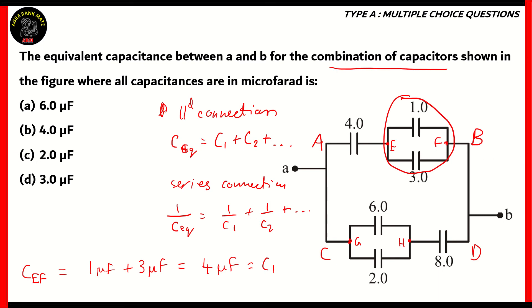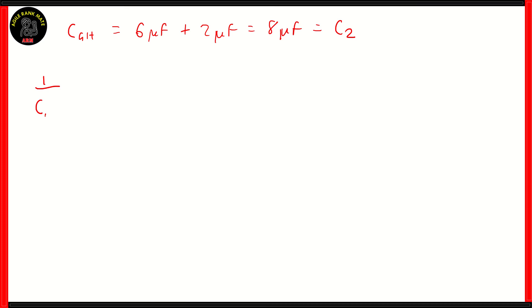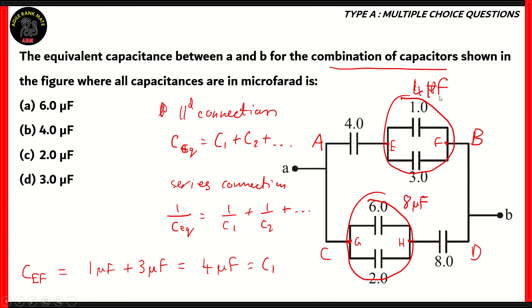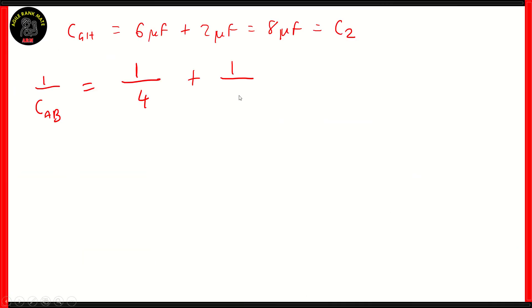We found out the equivalent across EF is 4 microfarad, and the equivalent across GH is 8 microfarad. Now, we need to find out the equivalent capacitance across AB and CD. Both of these are now considered as series connections, so we'll use the series connection formula. 1 over CAB will be 1 over 4, plus the equivalent for EF which is 4, so 1 upon 4 plus 1 upon 4. That gives you 2 upon 4 as the reciprocal of CAB, which means CAB itself will be 4 upon 2, which is 2 microfarad.